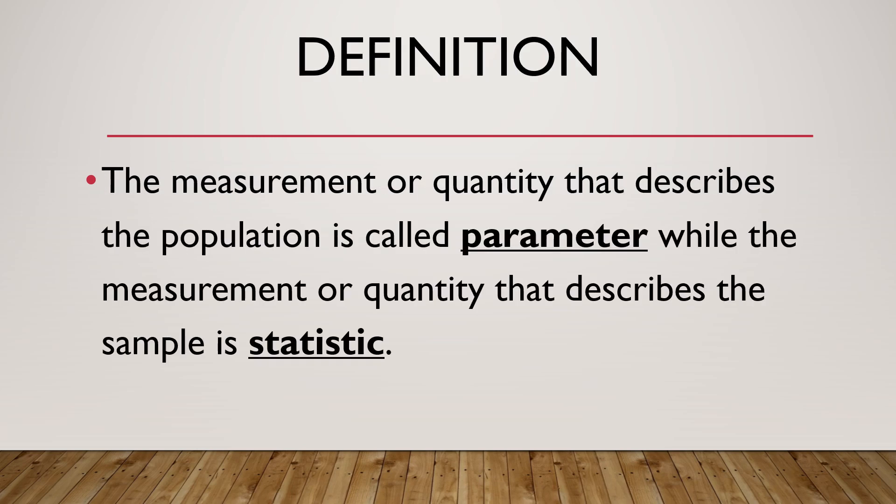Let us have some definitions. The measurement or quantity that describes the population is called a parameter, while the measurement or quantity that describes the sample is called a statistic.